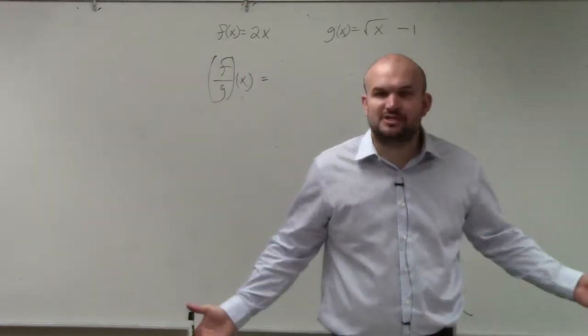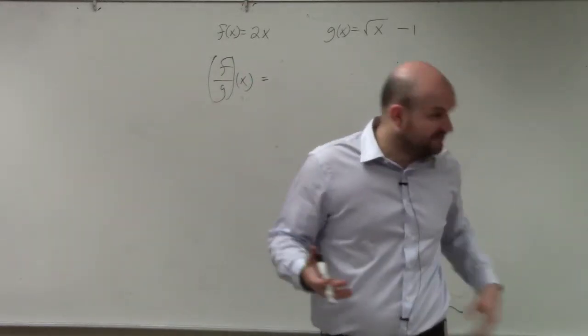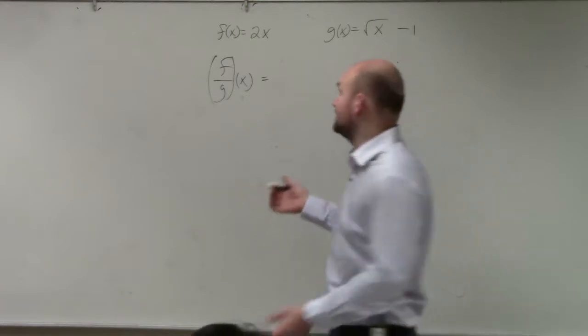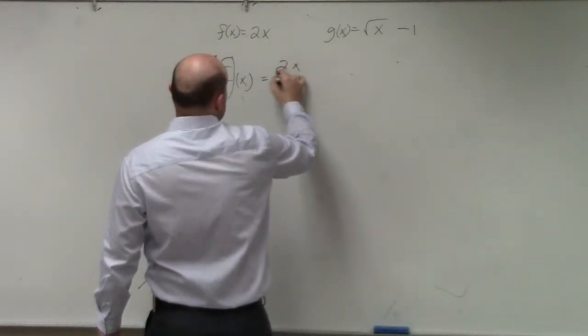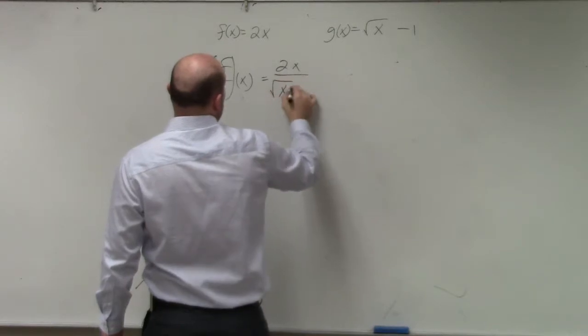Again, all we're simply doing, ladies and gentlemen, is taking the f of x function and dividing it by the g of x function. That's really it. So therefore, I simply have 2x divided by the square root of x minus 1.